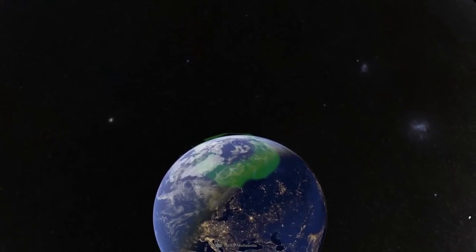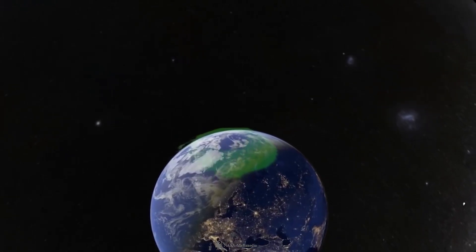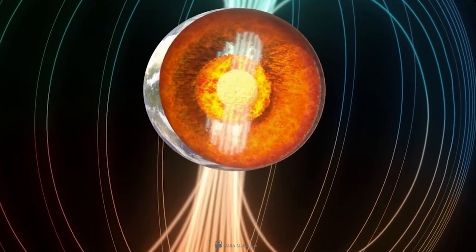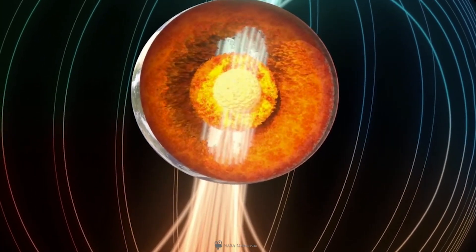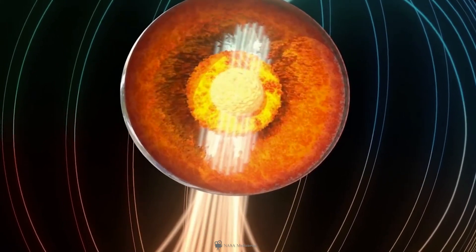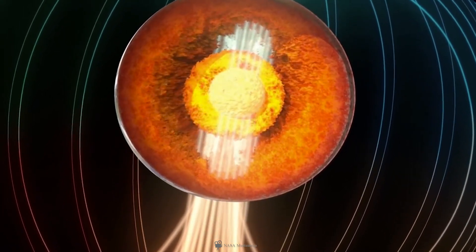But unlike a bar magnet, the core magnetic field is not perfectly aligned through the globe, nor is it perfectly stable. That's because the field originates from Earth's outer core, which is molten, iron-rich, and is in vigorous motion 1,800 miles below the surface.